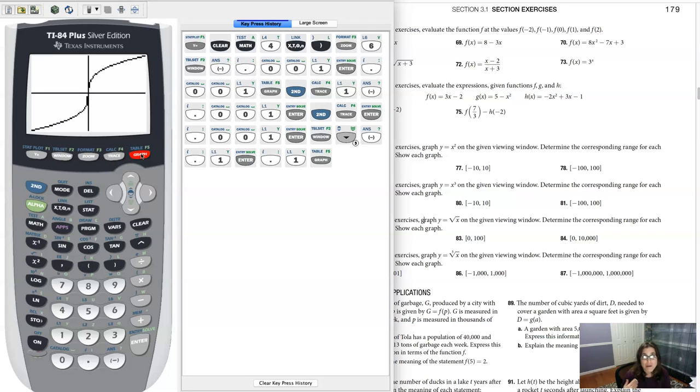So that would be my window that I needed for my range. I need at least my y min to be negative 0.1 and my y max to be positive 0.1. You could go above and beyond that if you wanted, but you saw when we went too far, it was almost impossible to see the function.